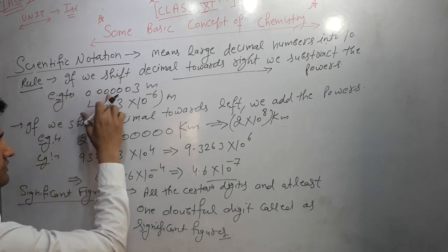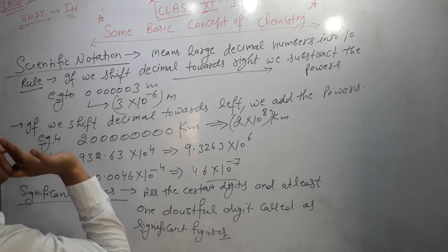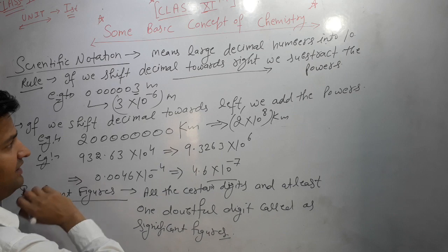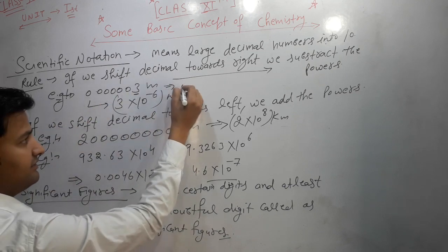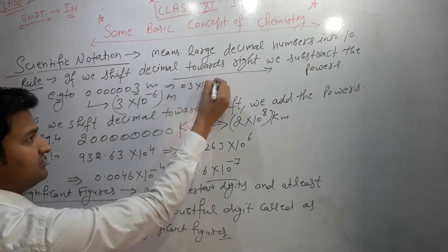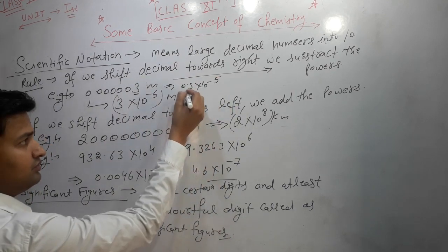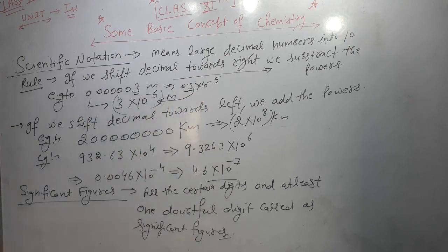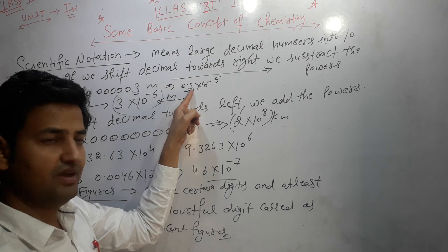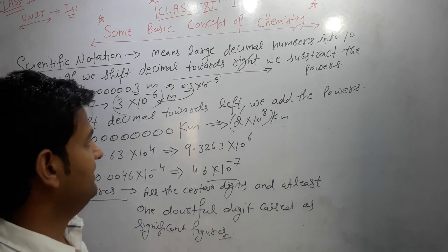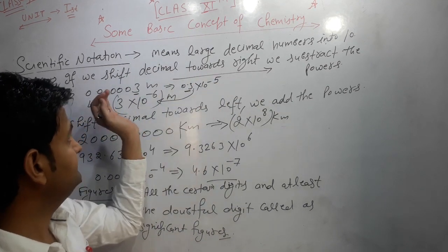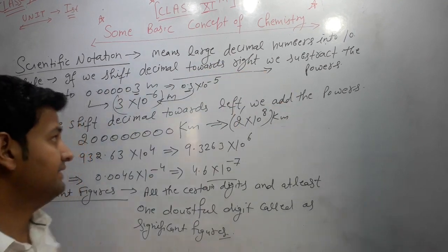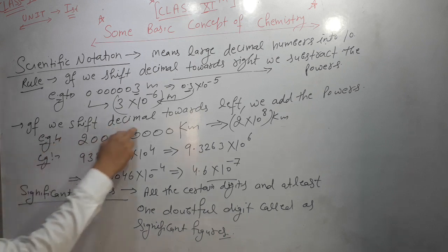Example: 0.0000003 — counting the zeros, the digit 3 is in the 7th place, so we write it as 3 × 10⁻⁷. Alternatively, 0.3 × 10⁻⁵ works too. When we shift the decimal to the right, we subtract the power of 10.